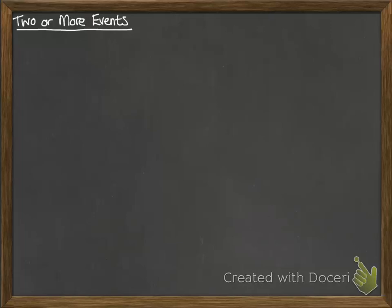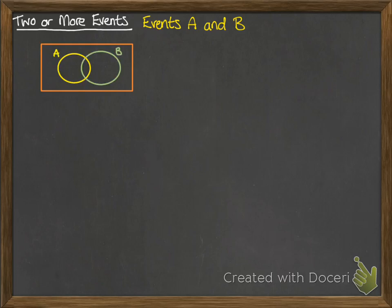Two or more events. So imagine we have events A and B. We can set them up like this as a Venn diagram and we've got some notation to have a look at.